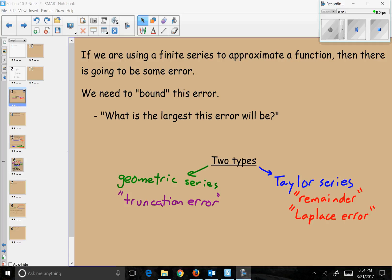We're going to deal with the geometric series first because this one's a little bit easier to think through, and that's what's called a truncation error. I'll come back to the Taylor series part later.